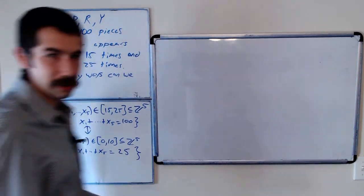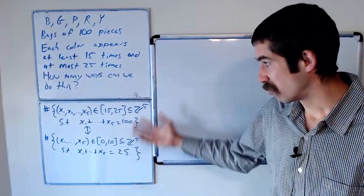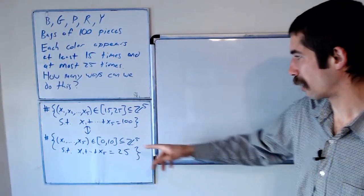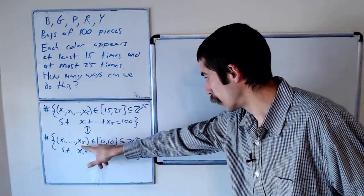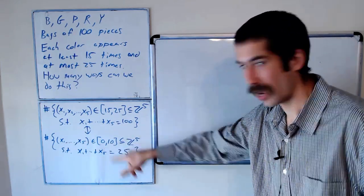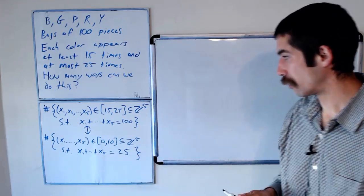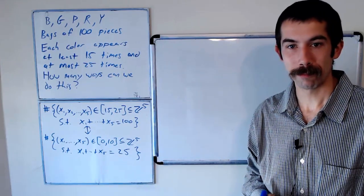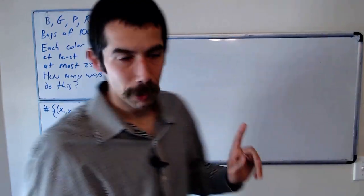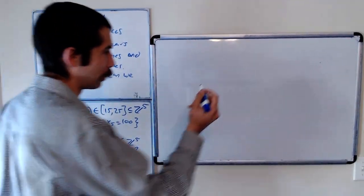Okay, so we want to count this instead. Well, it's the same number. We want to count the number of groups of five numbers between 0 and 10, including them, such that they add up to 25. Okay, so before we can answer this, we need a little bit of notation.